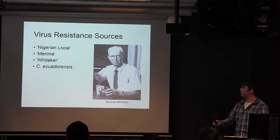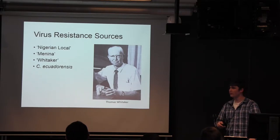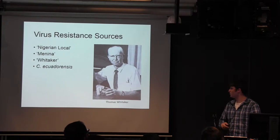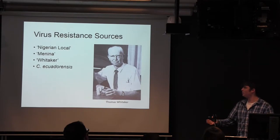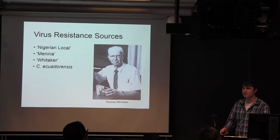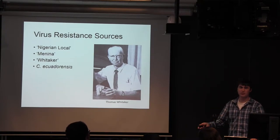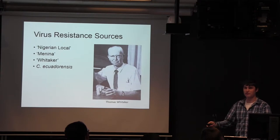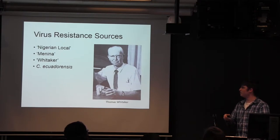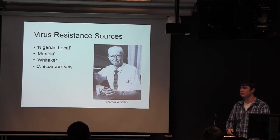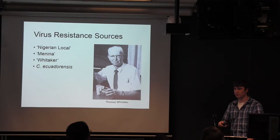In the past, it's been used to bring in those disease resistances. People also use this variety called Whitaker, named for Thomas Whitaker, a famous cucurbit geneticist. It has resistance brought into cucurbita pepo from three related wild species, so it has a very interesting pedigree. People have been using this as a bridge. Very rarely, people are using cucurbita ecuadorensis, which is one of those related wild species that is much more difficult to cross with, but it does have resistance.